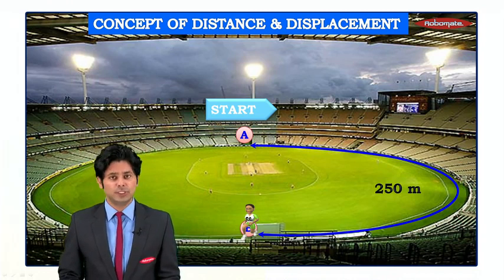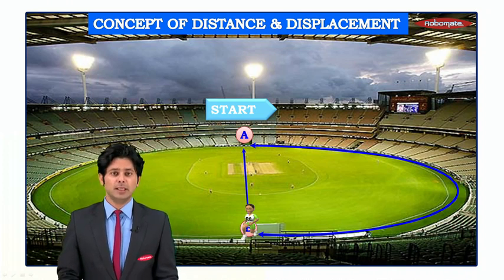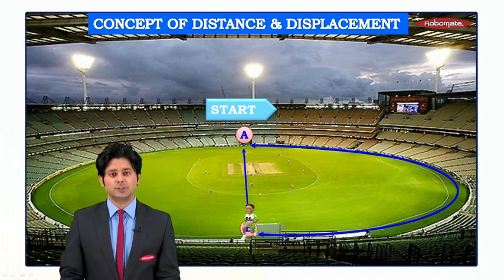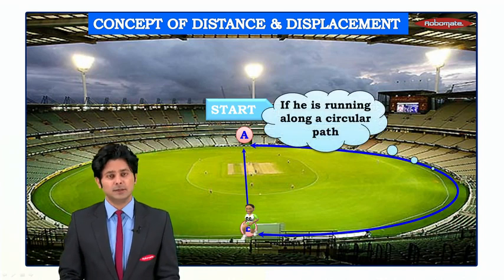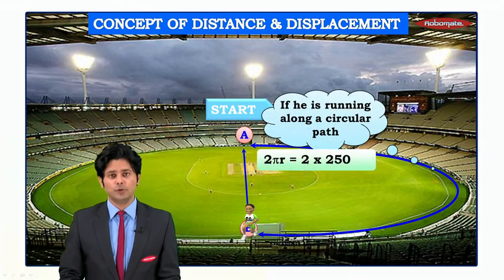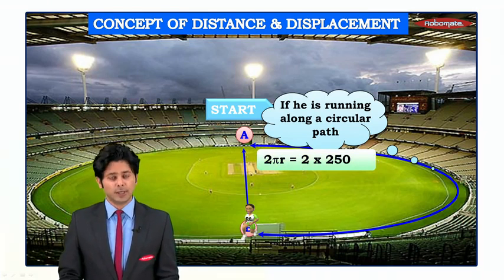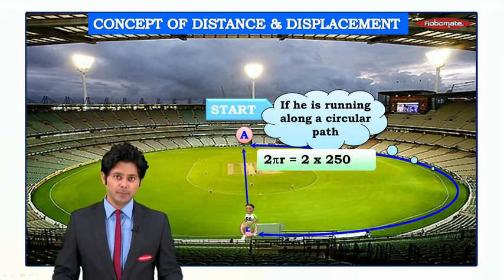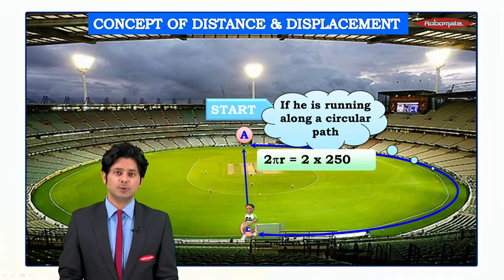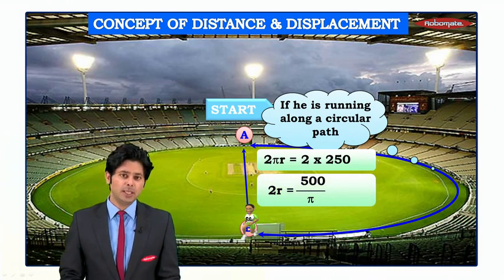In this case, the distance is equal to 250 meters. If we draw a line from point A to B — which is exactly at the opposite end of a circular track — then according to the formula, the circumference 2πr is equal to twice the distance traveled: 2πr = 2 × 250.